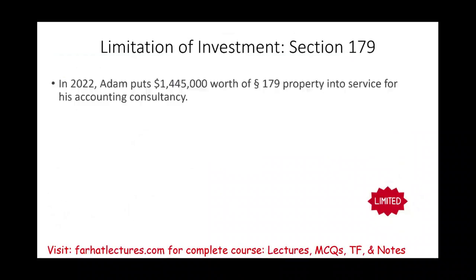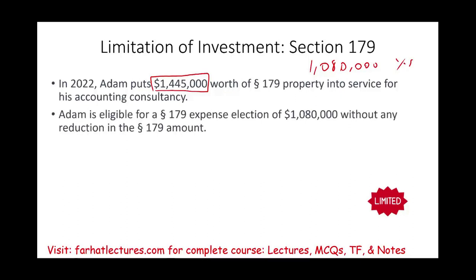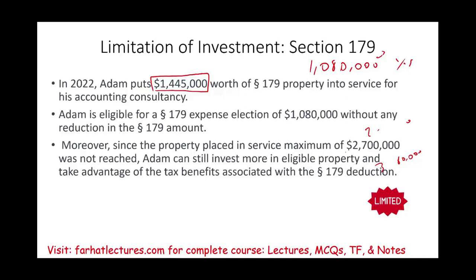Let's address the investment limitation. Assume Adam places $1,445,000 of Section 179 property in service for his accounting consultancy in 2022. Can he take the full $1,080,000? Yes, because you don't lose any Section 179 until you've placed $2.7 million in service. Since Adam is below that threshold, he can still invest more without losing a penny — up to $2.7 million before starting to lose any deduction, and completely losing it at $3,780,000.